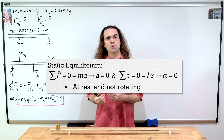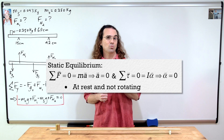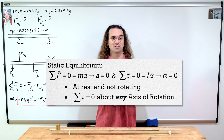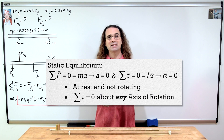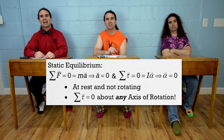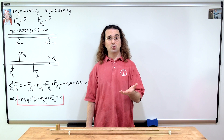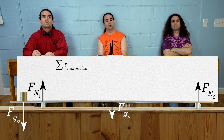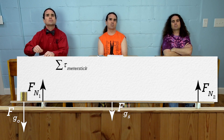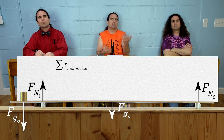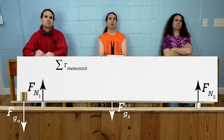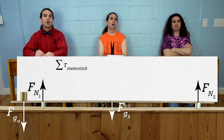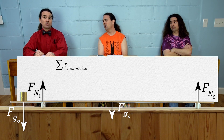When an object is in static equilibrium, the net torque acting on the object equals zero about not just one axis of rotation, but any axis of rotation. Therefore, in this problem, we can set the net torque equal to zero about any axis of rotation. You can pick any axis of rotation and the net torque will always equal zero. Let's put the axis of rotation at the location of one of the normal forces — because then the torque caused by that force normal will be zero. Let's pick force normal one, or the 15 centimeter mark, as our axis of rotation.